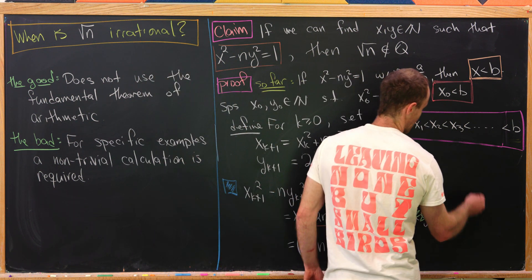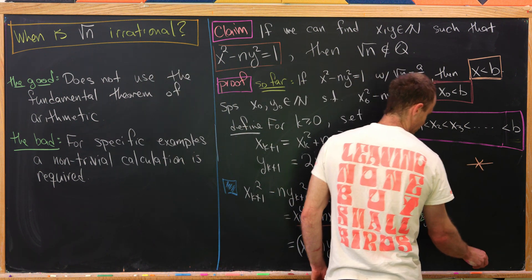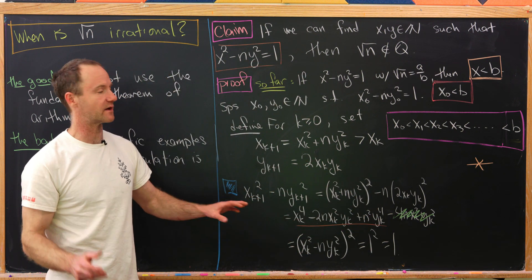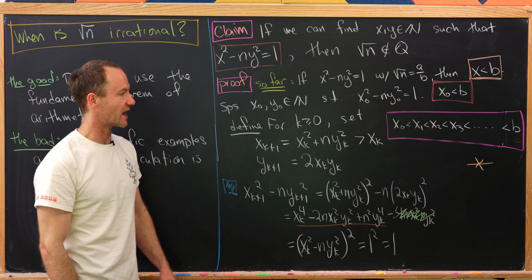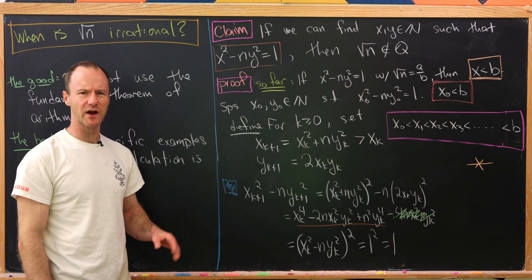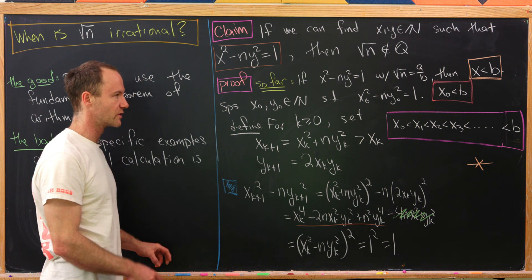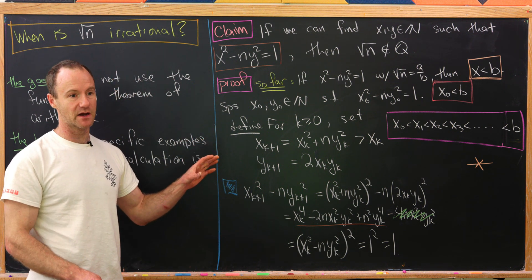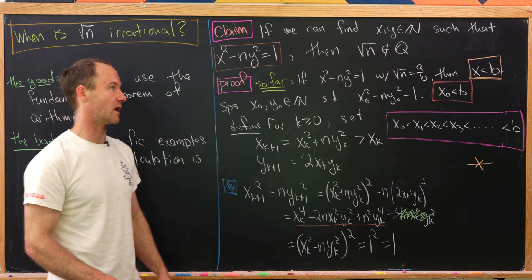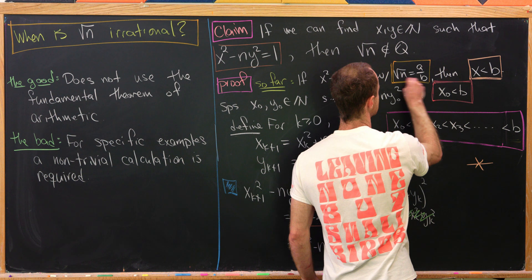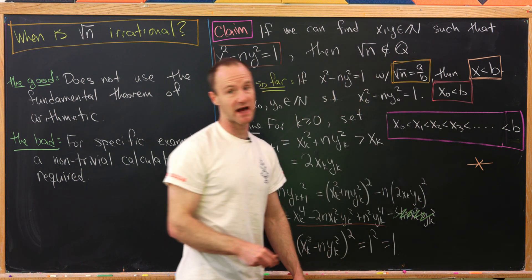That leads us to our contradiction. I didn't write the final argument down, but I said it in words, hopefully clearly enough. We've got a contradiction. What did we contradict? That's where I like to go up to one of our original places in the proof where we made an assumption instead of following logic. And the assumption that we made was that the square root of n was rational.